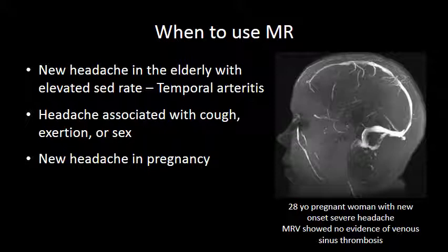Pregnant women also warrant MRI imaging in the setting of a new headache, because there is a high incidence of abnormality in women, often due to the hypercoagulability of pregnancy. In the image on the right-hand side of your screen, you can see an MR venogram evaluating the dural venous sinuses in a pregnant woman who had an acute onset of severe headache. This is used to rule out venous sinus thrombosis or venous infarctions.